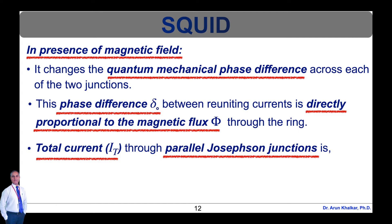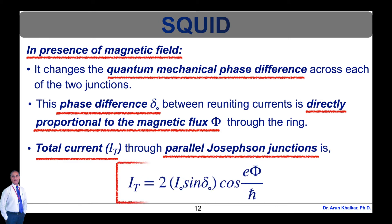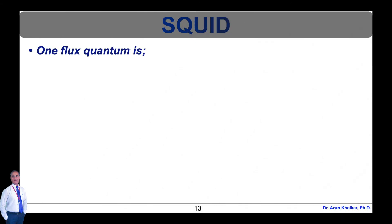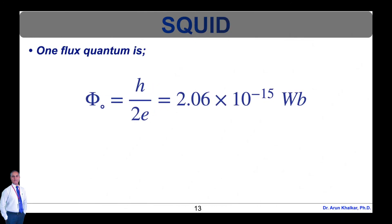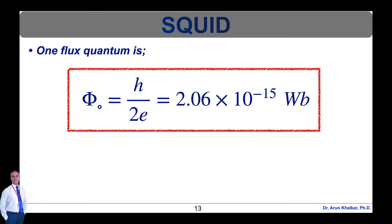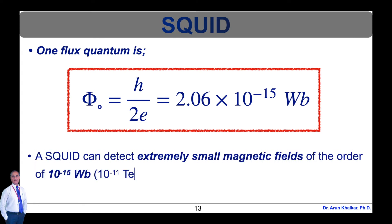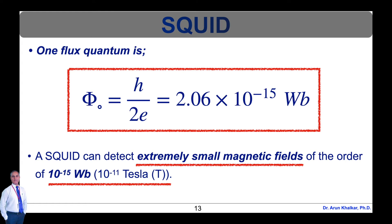Therefore, total current through the parallel Josephson junction can be written as It = 2·I₀·sin(Δ₀)·cos(eφ/ℏ). In SQUID, a progressive increase or decrease of magnetic flux causes the current to oscillate between a maximum and minimum when the magnetic flux increases by one flux quantum. One flux quantum φ₀ = h/2e = 2.06×10⁻¹⁵ Weber. Thus, a SQUID can detect extremely small magnetic fields of the order of 10⁻¹⁵ Weber, that is 10⁻¹¹ tesla. This sensitivity can further be increased using a flux transformer.